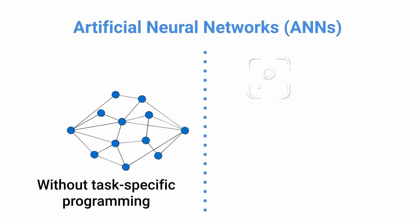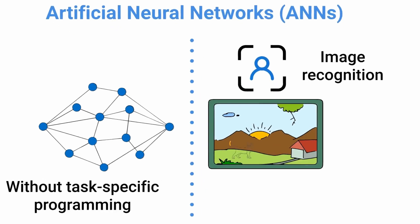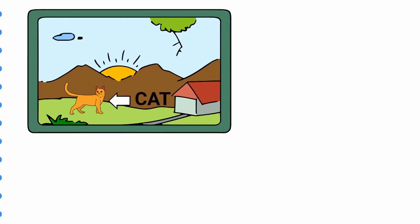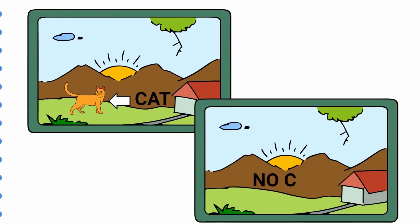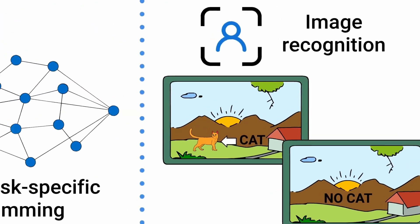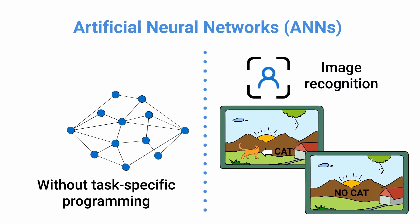For example, in image recognition, they might learn to identify images that contain cats by analyzing example images that have been manually labeled as cat or no cat, and using the analytic results to identify cats in other images. However, they have found most applications in challenges to express with a traditional computer algorithm using rule-based programming.